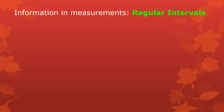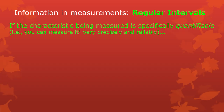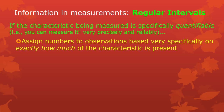Now the final piece of information: we have differences, we have an inherent order, and now regular intervals. If you have measures that are already ordered and in addition it's possible to measure the amount or intensity of the characteristic very precisely with a high degree of reliability, then you can assign numbers not just based on whether one is more than the other, but on exactly how much more than the other one it is.